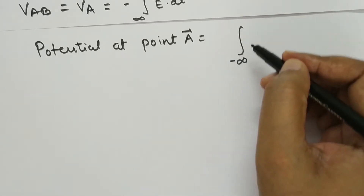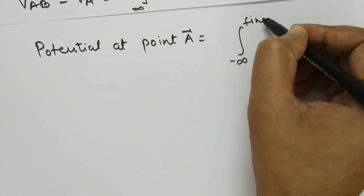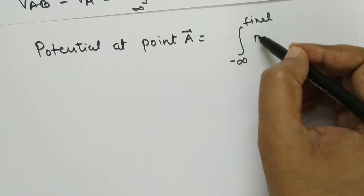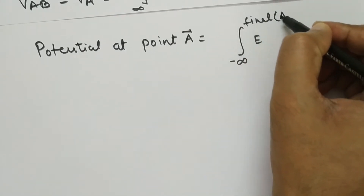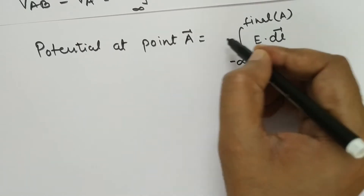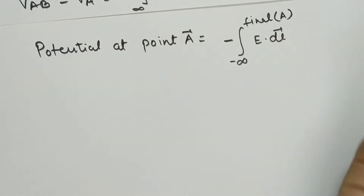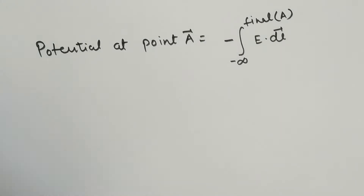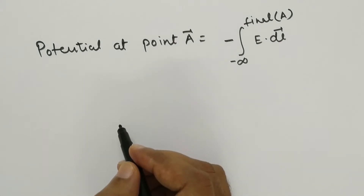So the potential at point A is given by minus the integral from infinity to the final point of E dot dL. Using this formula, we can calculate the potential field for any charge distribution. Now let's start with a point charge and calculate the potential.